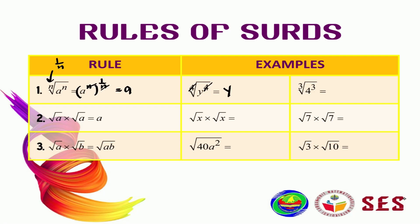Moving on to the second rule. The square root of A multiplied by the square root of A will become the square root of A squared. Remember, when we have no root number written, this means it belongs to square roots. So, similar to the first rule, these two can cancel out to be just A.